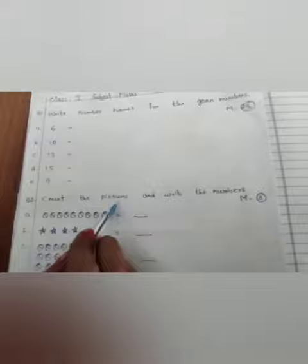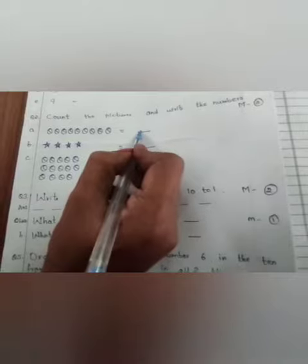Now, part B, question number 2. Count the pictures and write the numbers. See children, first you have to count the picture. How many pictures are there? Then you have to write number.